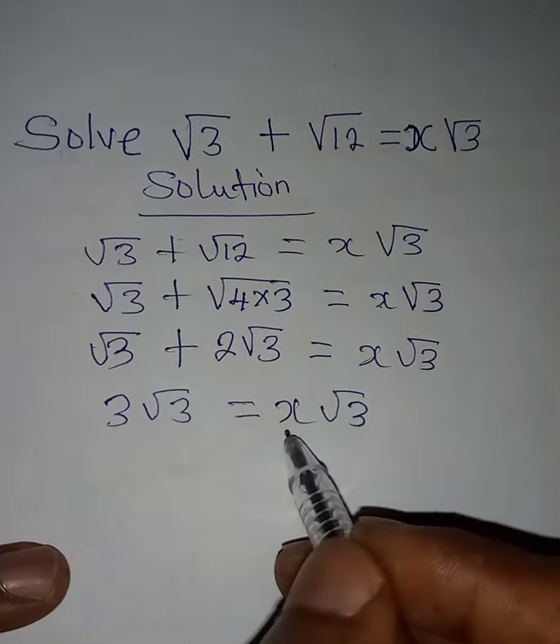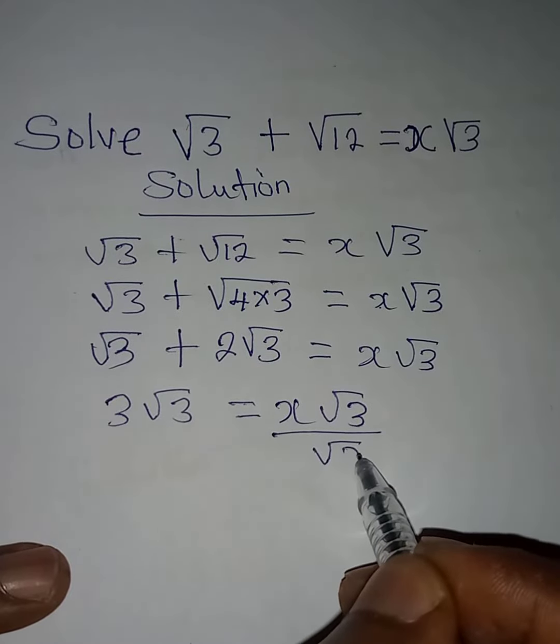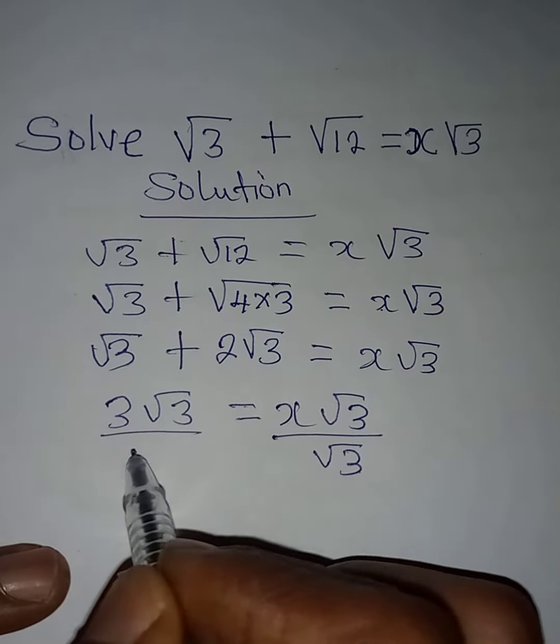Now we can divide both sides by √3 so that we get the value of x. Divide this by √3.